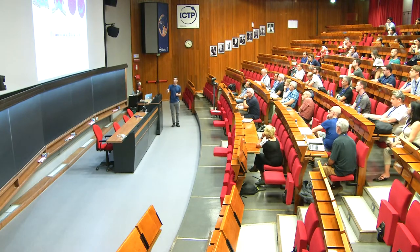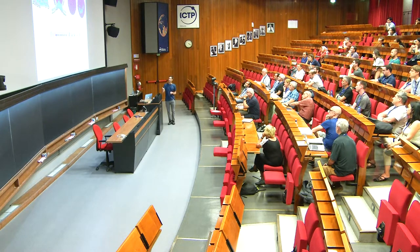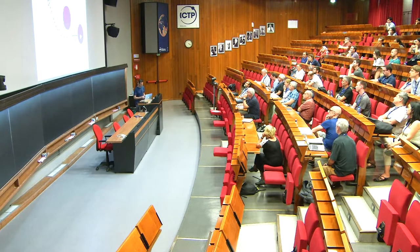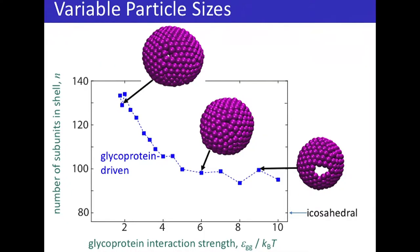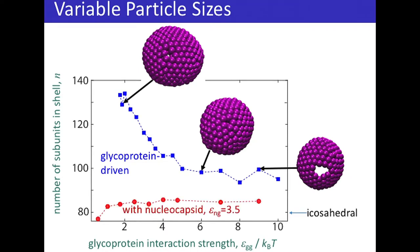One thing that surprised us is that the size of complete shells is not uniform. As I vary interaction strength, the mean shell size varies over a significant range and is always larger than the preferred size of 80 trimers without the membrane. As interactions get stronger, we approach 80 trimers but never get there before the shells become holey. This is surprising because normally stronger interactions should give assemblies less similar to the ground state. With the nucleocapsid present, the budded shells tend to be much closer to the preferred size.